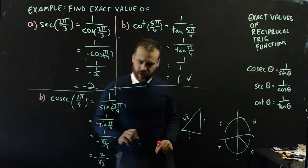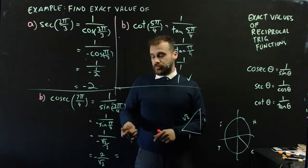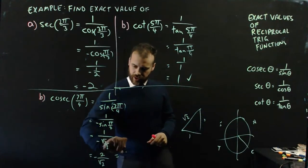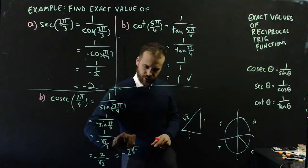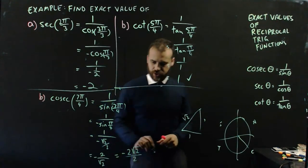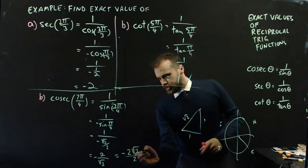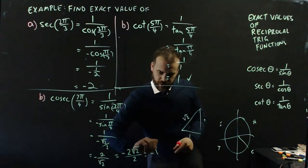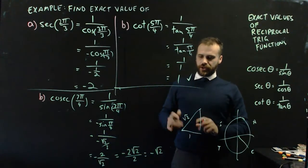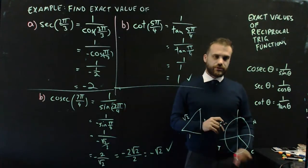So, I'll multiply top and bottom by √2. That will give me negative 2√2 over 2, which is just negative √2. My final solution is negative √2.